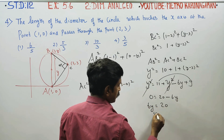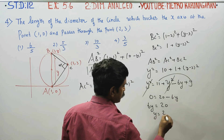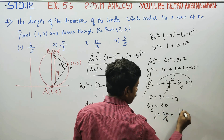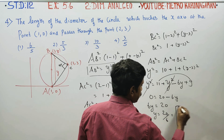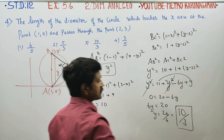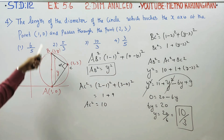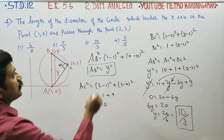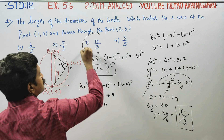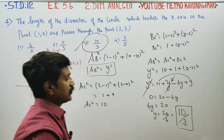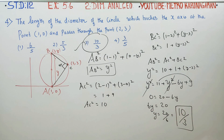So 6y = 20, therefore y = 20/6 = 10/3. This is your diameter. The diameter is 10/3. So the third option, 10/3, is your exact answer. You have to tick the third option. Thank you.